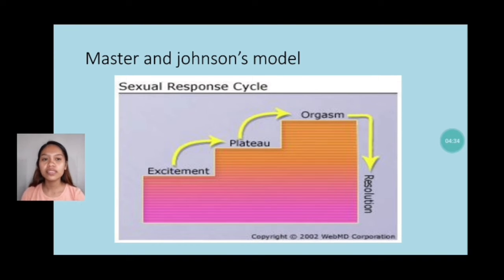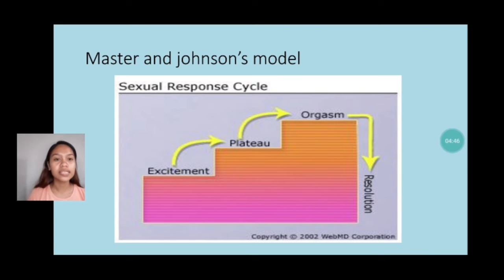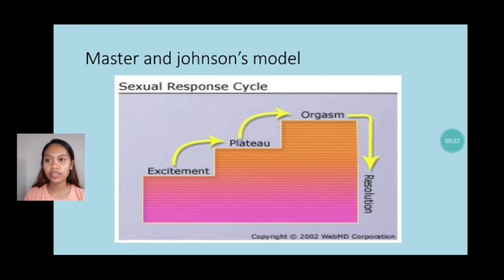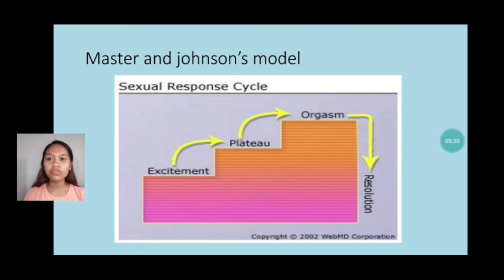This is the example of Masters and Johnson's model of the sexual response cycle. The first phase is excitement, with general characteristics including lubrication and erection of the penis. Next is the plateau phase, which extends briefly before orgasm. The changes begun in the excitement phase are intensified. The vagina continues to swell from increased blood flow and will turn a dark purple. The woman's clitoris becomes highly sensitive, and the man's testicles tighten.